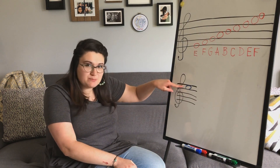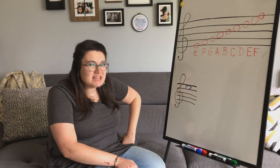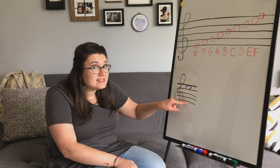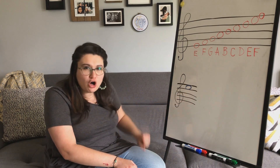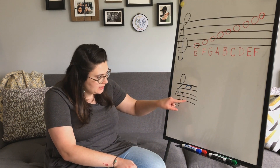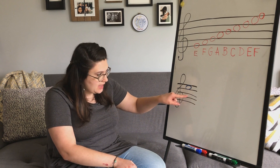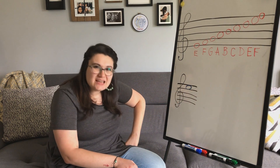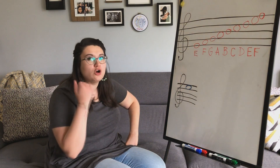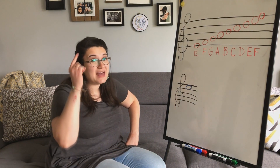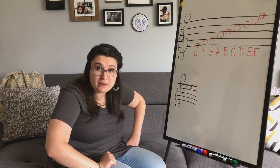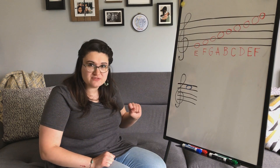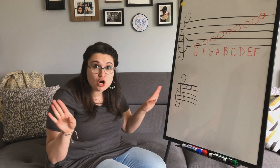All right, so let's say we have this pitch right here, this note. Instead of having to start all the way down at this bottom line — we know the bottom line is E — and counting all the way up the whole alphabet going E, F, G, A, B, C, D, E... oh, that's an E. Instead of having to go through the whole alphabet, there's a way that makes it a little bit quicker to remember. We are going to divide our notes into two groups.